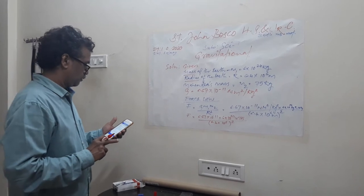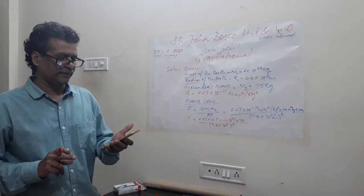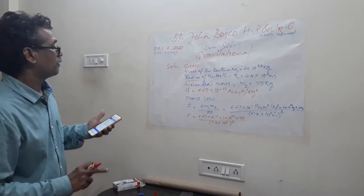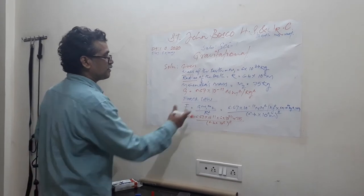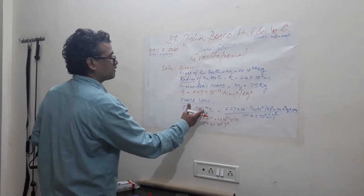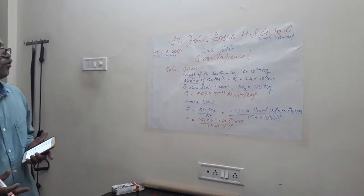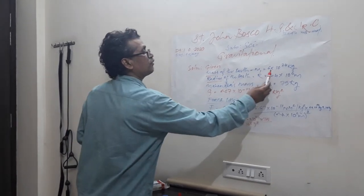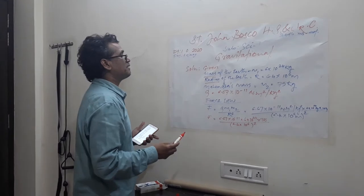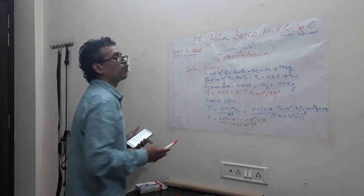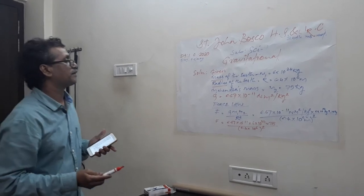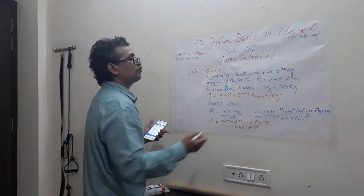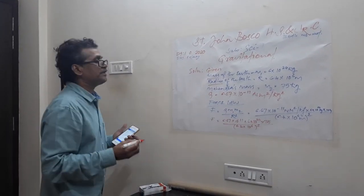The problem is: calculate the gravitational force due to the earth on Mahindra. The force formula is F = G times mass 1 times mass 2 upon radius squared. The mass of the earth is m1 = 6 into 10 raised to 24 kg, and the radius of the earth is r = 6.4 into 10 raised to 6 meters.